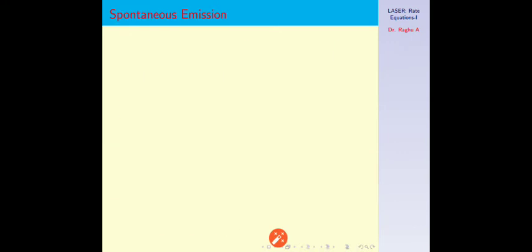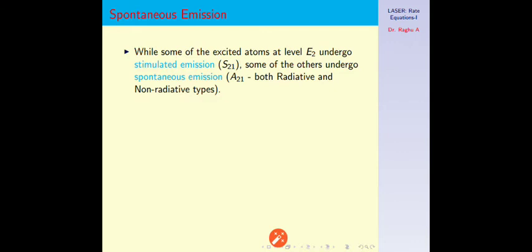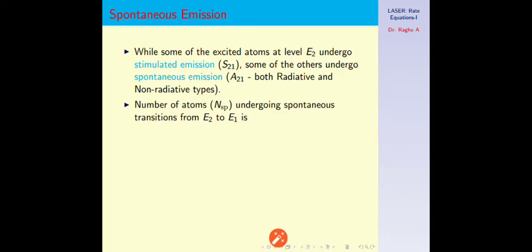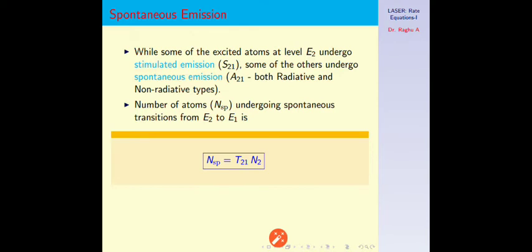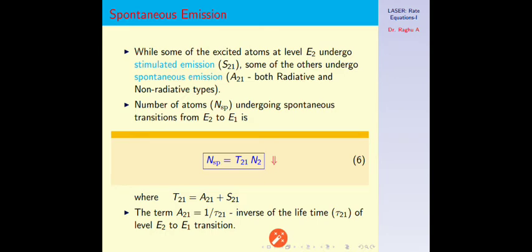The third process is spontaneous emission. For spontaneous emission, atoms must be in the excited state. Spontaneous emission competes with stimulated emission since atoms in the excited state can undergo either process — denoted by A21 and S21 respectively. Spontaneous emission can be both radiative and non-radiative. The number of atoms undergoing spontaneous emission is N_sp = T21·N2, where T21 = A21 + S21. The term A21 defines the inverse of the lifetime of the E2 to E1 transition.